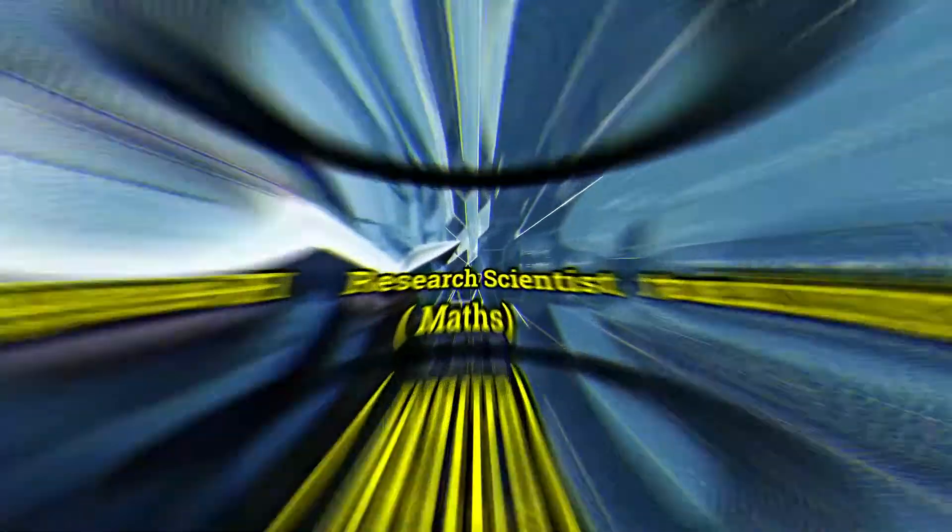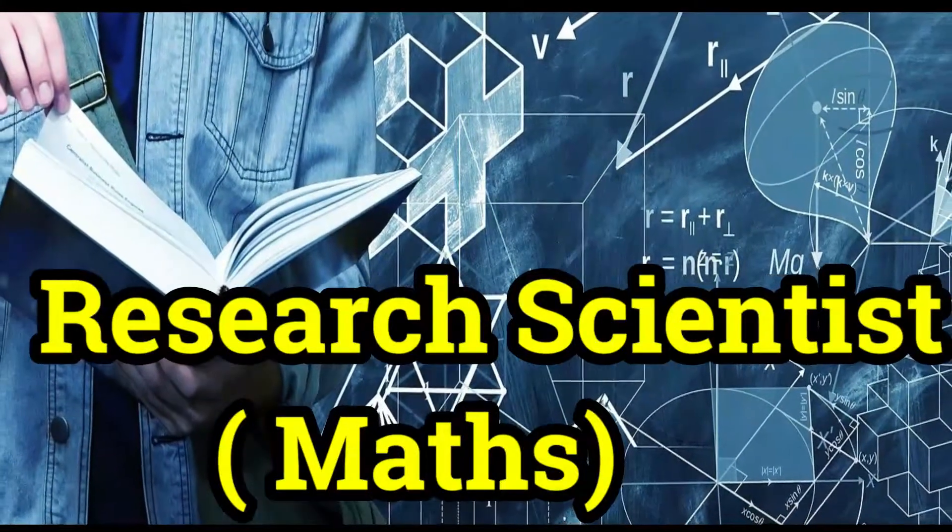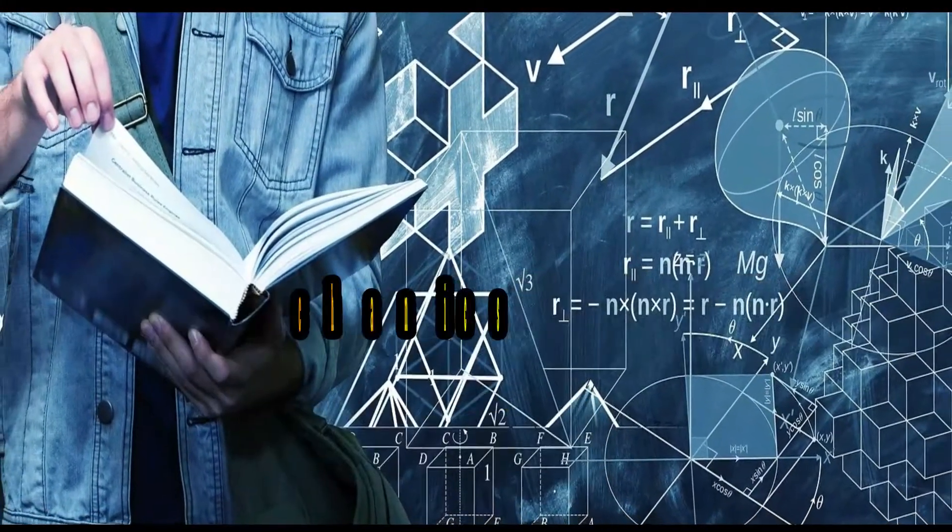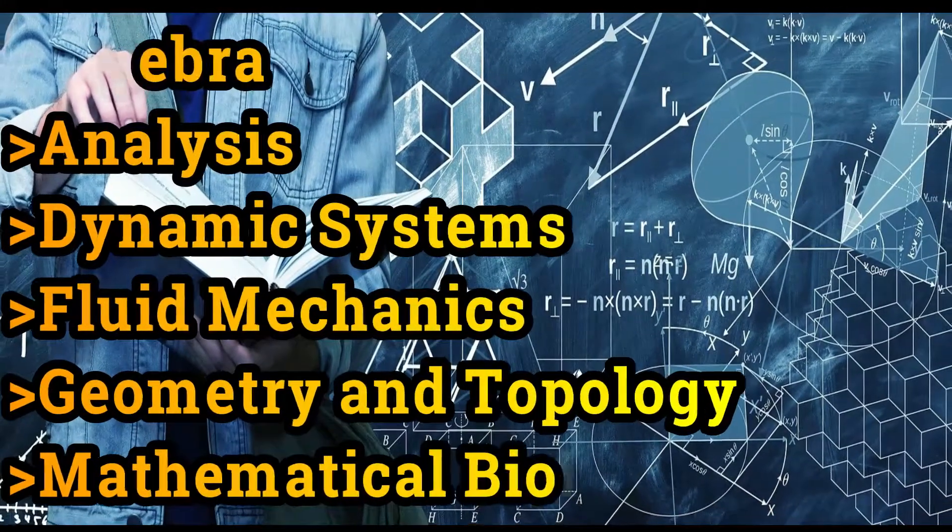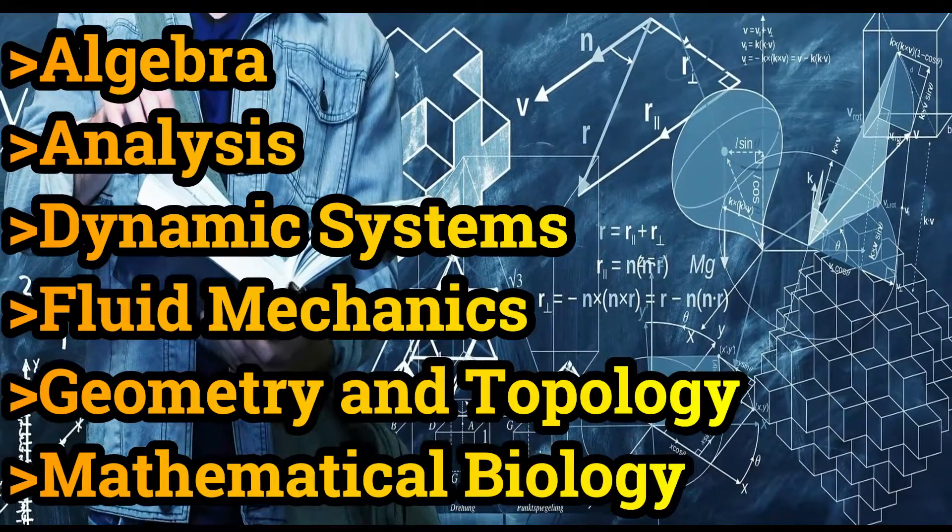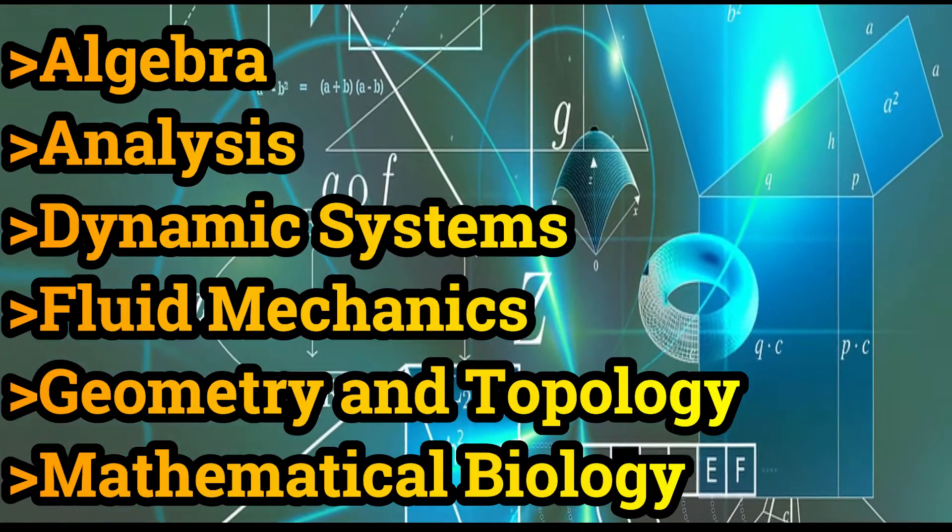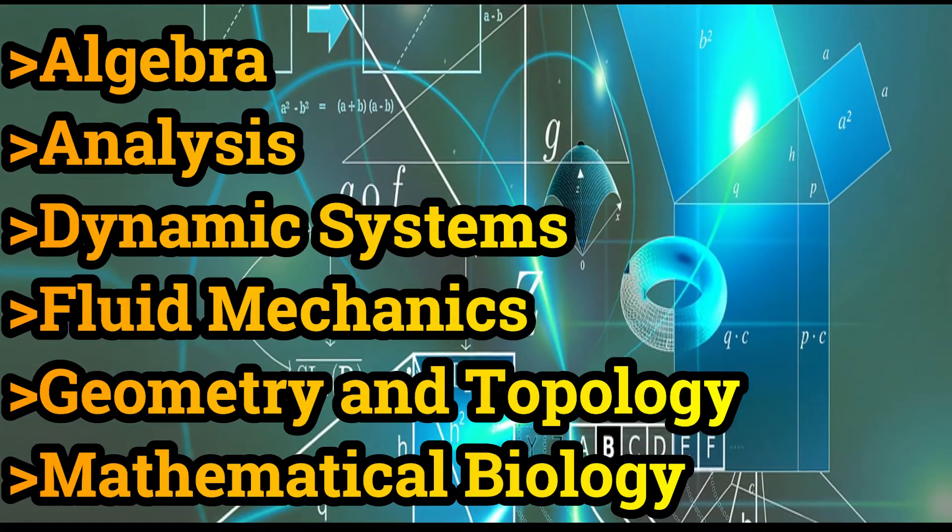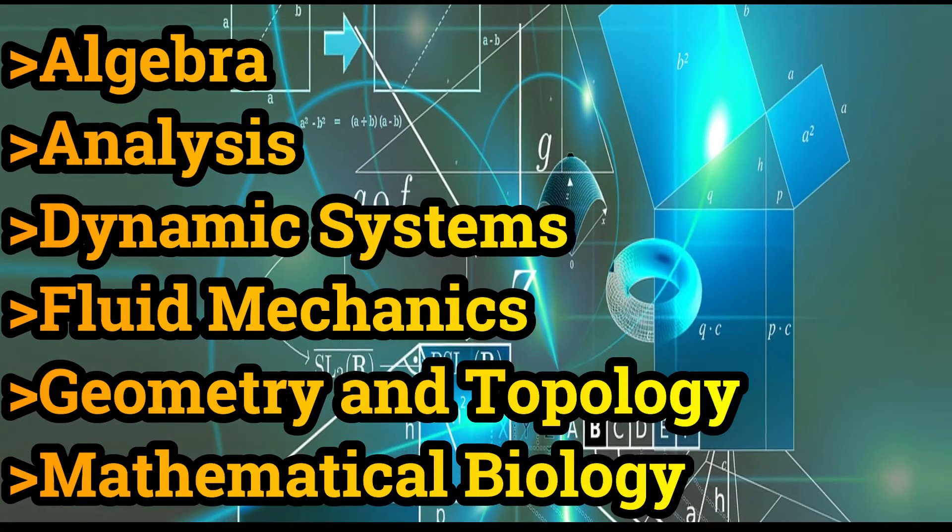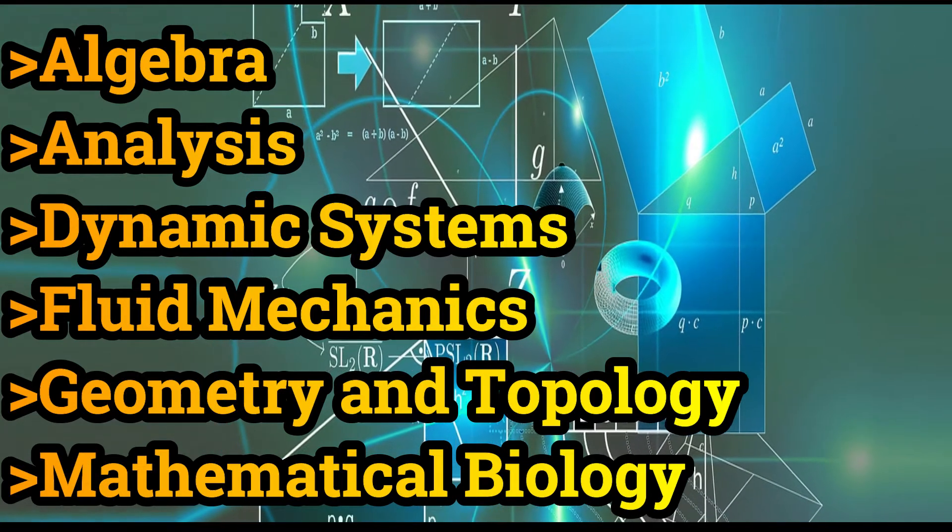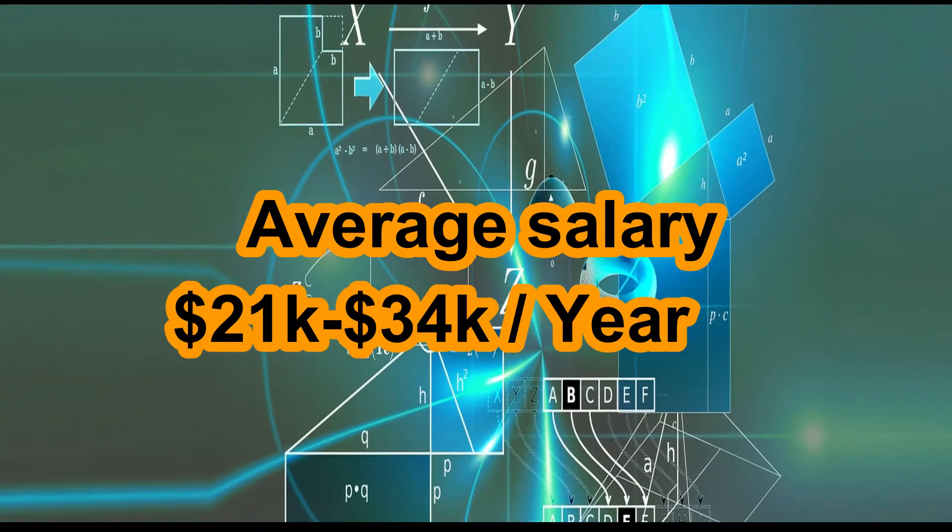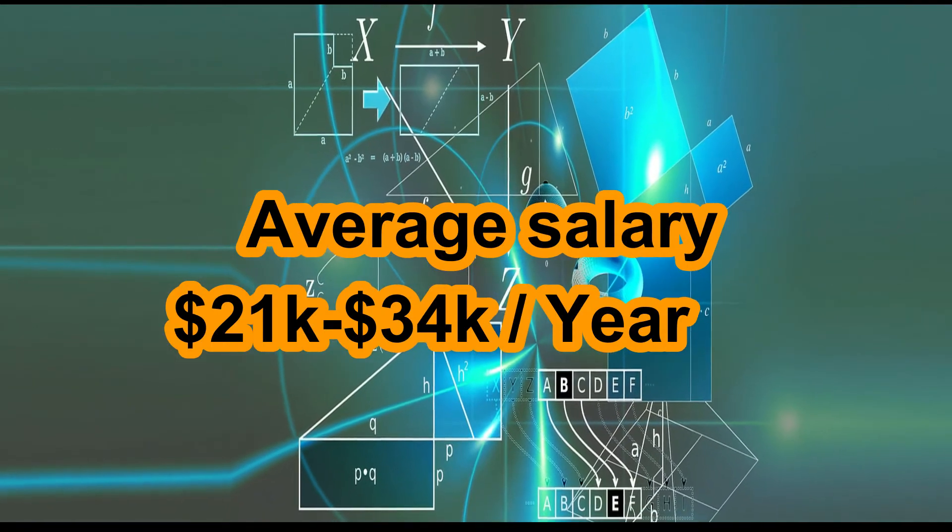Number eight, you can work as a mathematics research scientist. As a research mathematician, you can work in a variety of areas. You can undertake research into diverse range of pure and applied mathematics including algebra, analysis, dynamic systems, fluid mechanics, geometry and topology, mathematics biology. Average salary is around $21,000 to $34,000 per year.